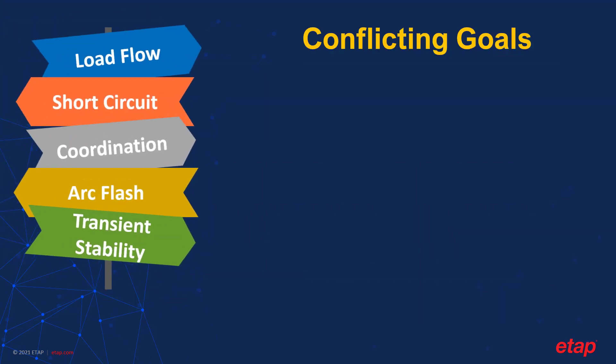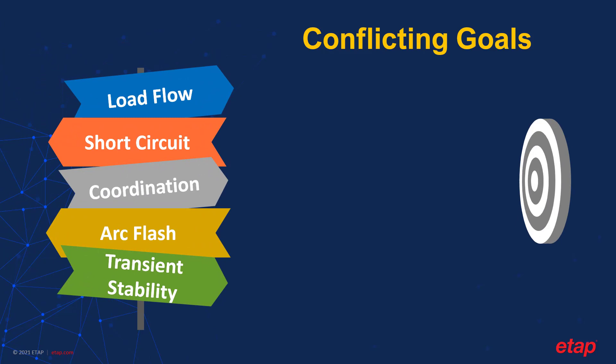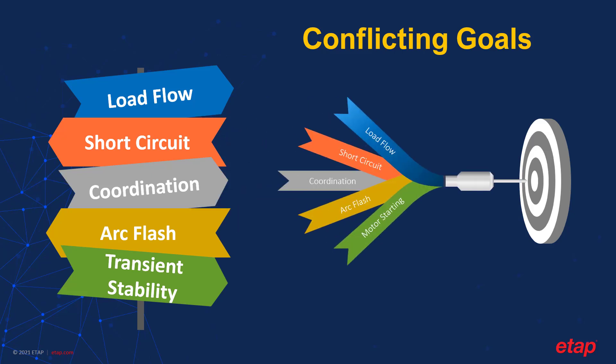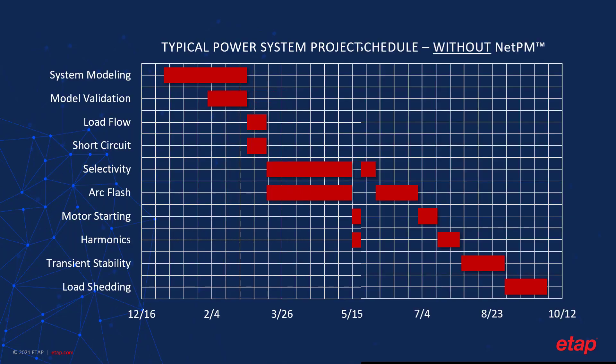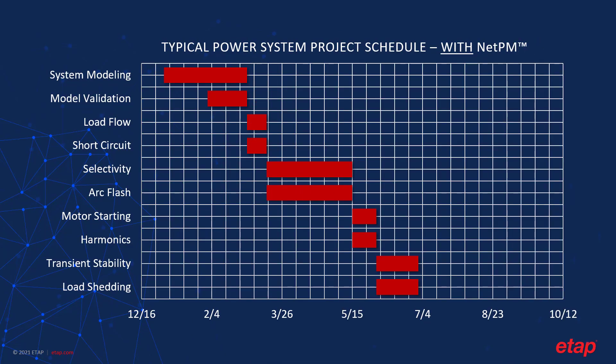The goals of some studies can pull the project in different directions. Engineers often must wait till one team is done before another can finalize their work. For example, when we consider impedance in load flow versus short circuit: for load flow, increasing impedance effectively increases voltage drop; however, in short circuit, we may want to decrease impedance to make it more conservative. With NetPM, what-if scenarios can instantly be submitted for approval and validation. Others can immediately see and take these changes into account when moving forward with their work. This is how NetPM drastically improves efficiency and shortens project completion times.